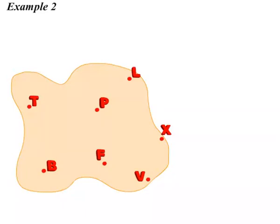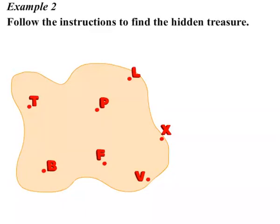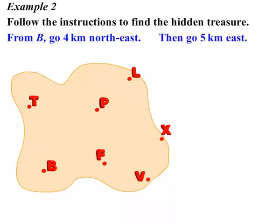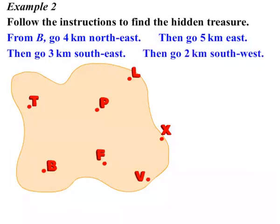Example 2. We've got our island there. We're asked to follow the instructions to find the hidden treasure. Oh, this sounds like good fun. Now from B, we're going to go 4 km North-East, then go 5 km East, then 3 km South-East, and finally we then go 2 km South-West.